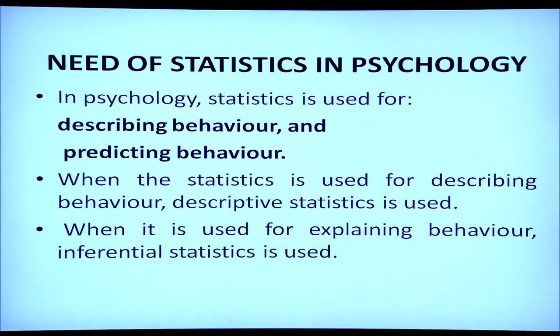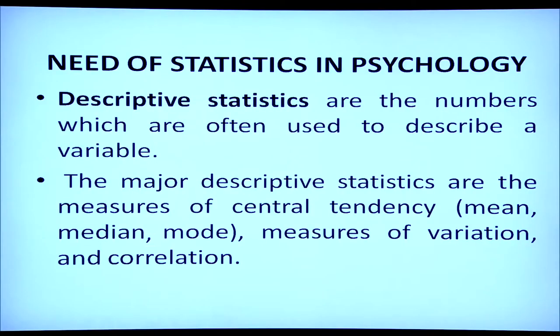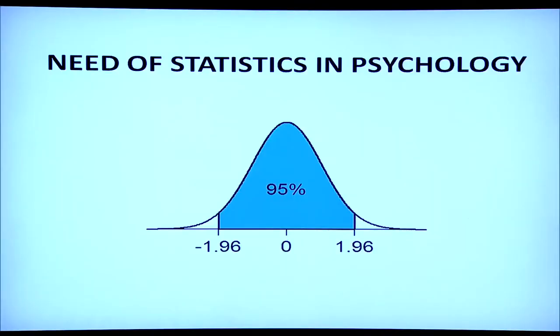Descriptive statistics are numbers which are often used to describe a variable. The major descriptive statistics are the measures of central tendency — which is mean, median, and mode — measures of variation, and correlation. We are going to discuss all these aspects now. This is an example of how when we are conducting psychological research and using statistics, we try to plot a graph. This is known as a normal probability curve — an image showing how numbers are plotted on a graph.